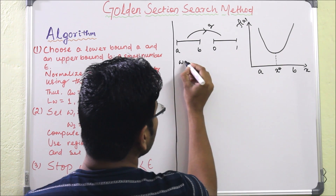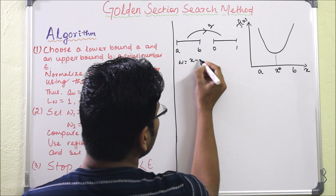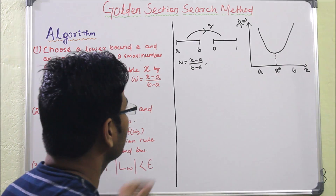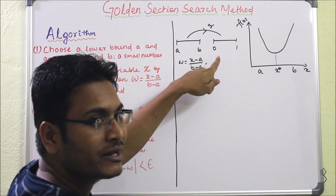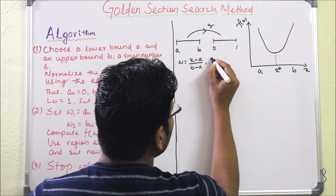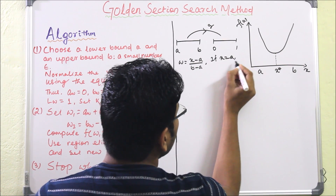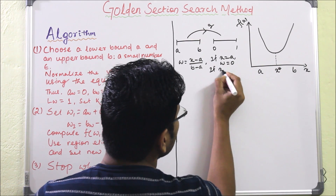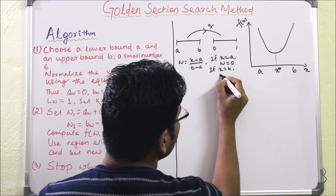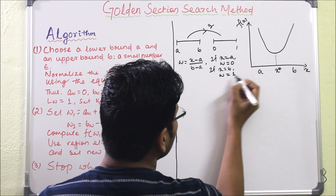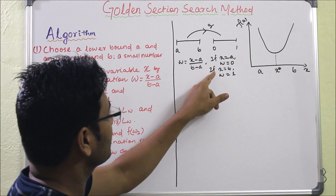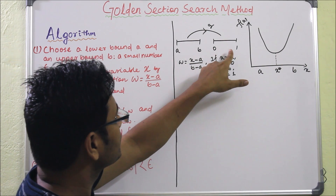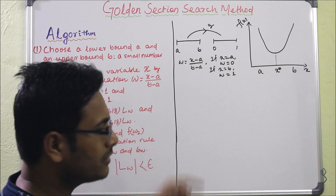We write the normalization function as w = (x - a) / (b - a). To verify: if x equals a, then w equals 0; if x equals b, then w equals 1. So this function converts any interval ab into the interval 0 to 1. We then find the new initial bounded values.